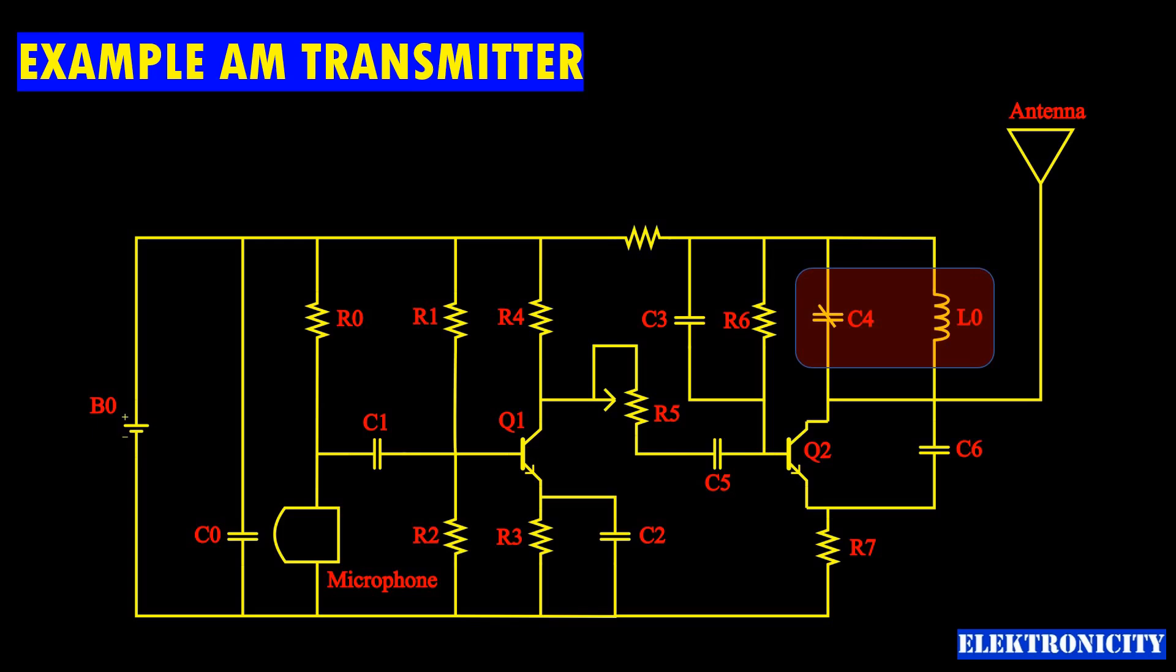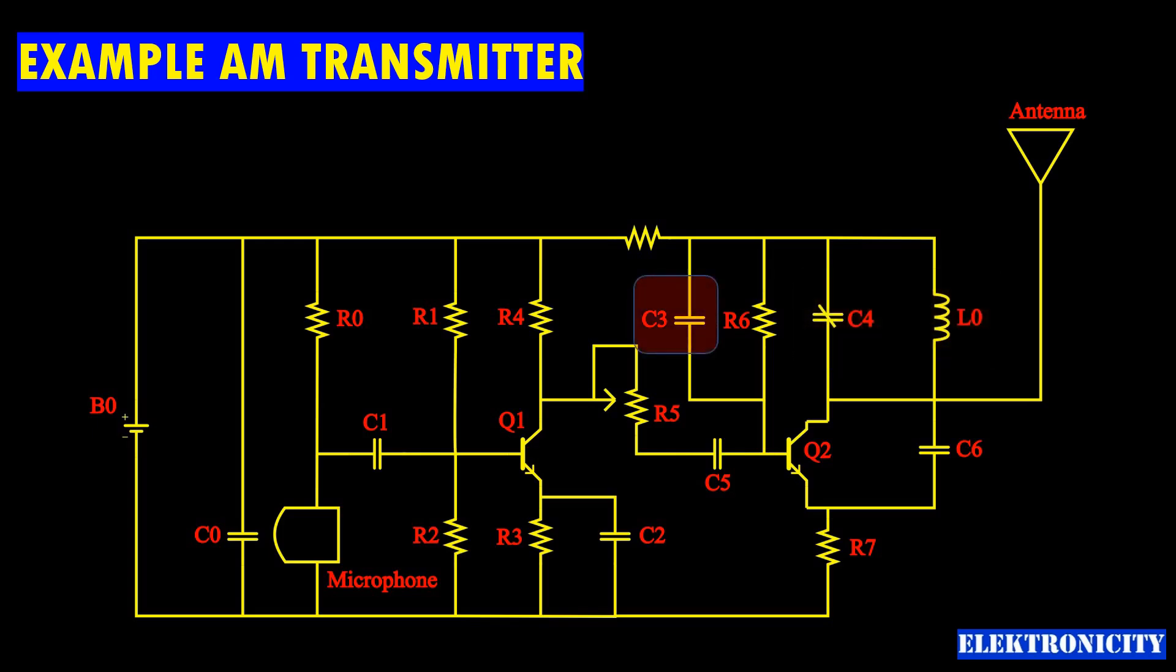There is a regenerative feedback loop in the oscillator formed by the capacitor C3 that couples signals from the base to the top of L0, and C6 capacitance ensures that the oscillation is transferred from the collector to the emitter and through the internal base emitter resistance of the transistor Q2 back to the base again.